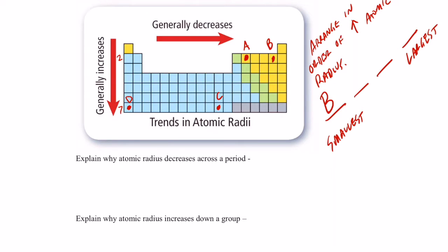Element B would have the smallest radius of that group of four. It's smaller than A because when you go across a period it gets smaller - you're gaining protons without gaining energy levels, so the effective nuclear charge pulls those electrons in more tightly. Then A would be the next largest. Between D and C, element C is next because it's further to the right. The largest of the four is D. So the order is B, A, C, D.